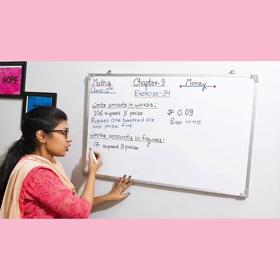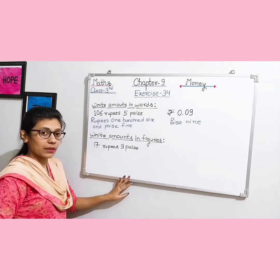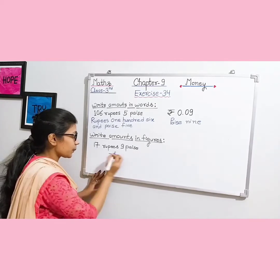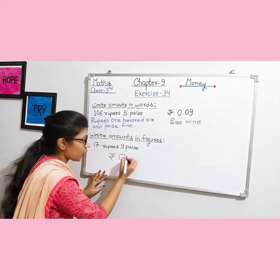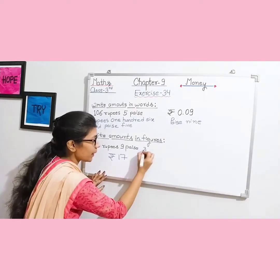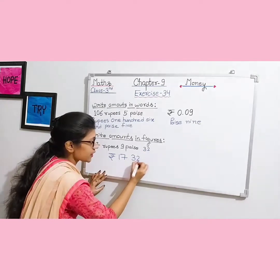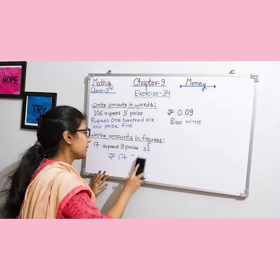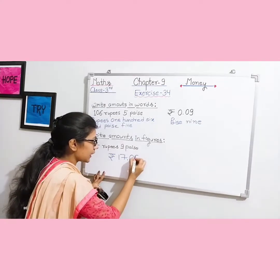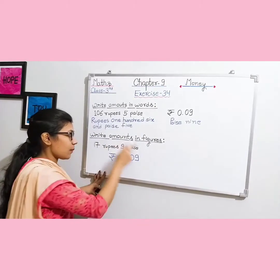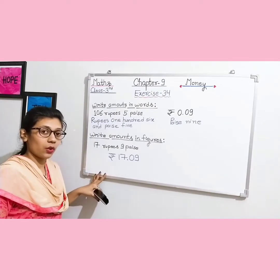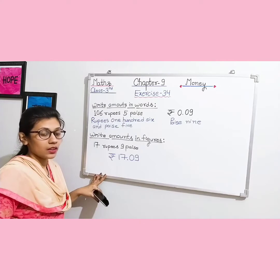Question number two: 'write amounts in figures'. To write in figure form, put the rupee symbol first. For example, 17 rupees 9 paise — write ₹17, then a dot, then write 9 paise as 09 (two digits). If paise is already two digits, like 32, write it as-is without adding a zero. So 17 rupees 9 paise in figure form is ₹17.09. Students who haven't done questions 1, 2, 3 yet should solve them again.